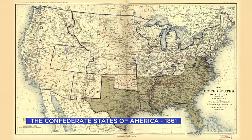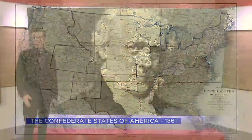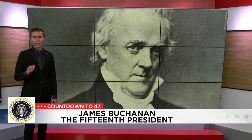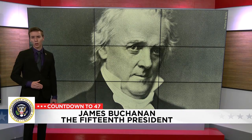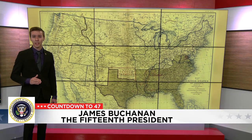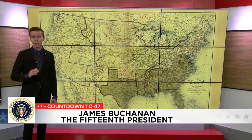The states of Mississippi, Florida, Alabama, Georgia, Louisiana, and Texas would all secede before Buchanan left office, with more to follow, eventually becoming the Confederate States of America. James Buchanan served as president of the United States from 1857 to 1861. The Union was torn asunder, and it was now up to incoming President Abraham Lincoln to handle the worst crisis the nation has ever seen, the Civil War.